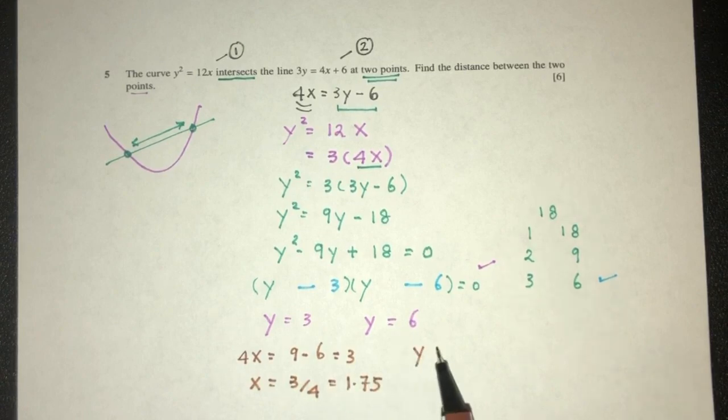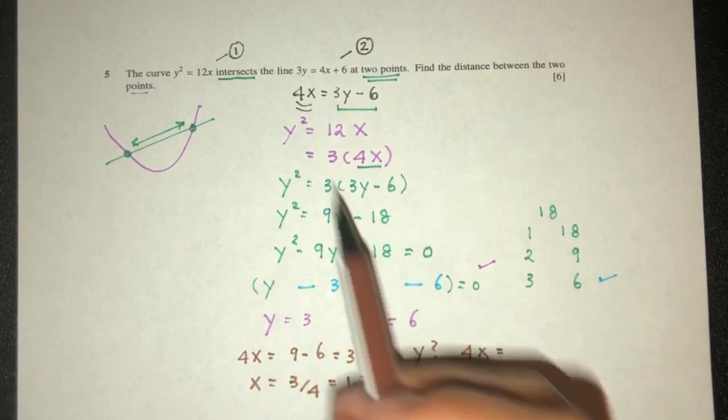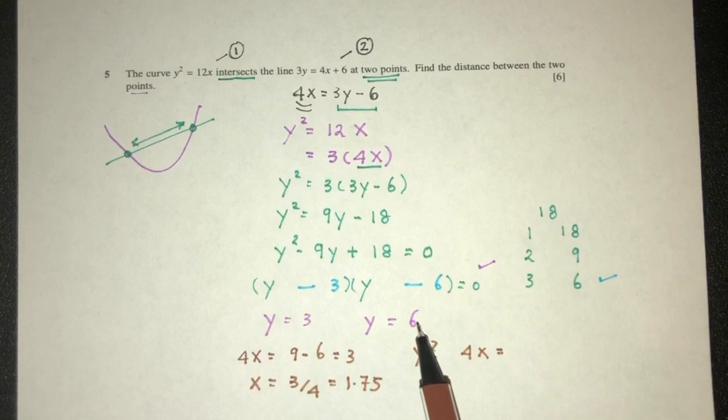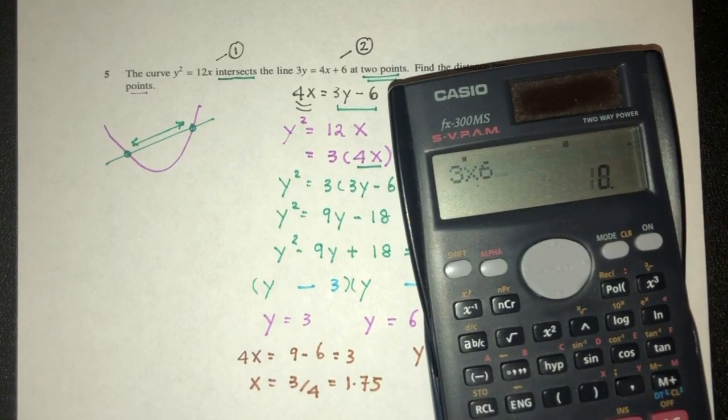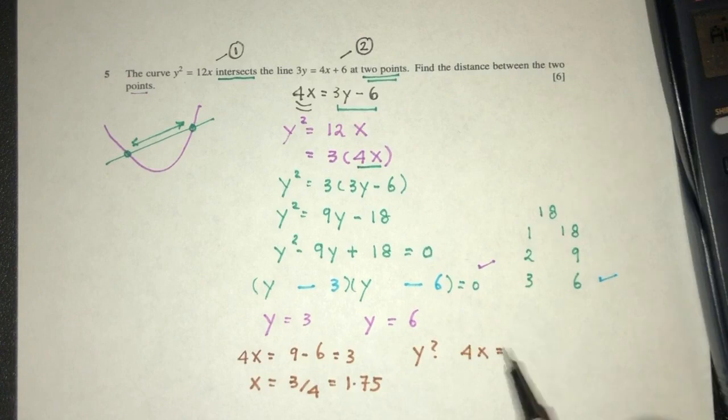This one, y should be 1. Let's replace. 4x is equal to 3 times y is 18. Right? So 3 times 6 you can check. 18 minus 6. That should be 12. So x will be the value of 3.